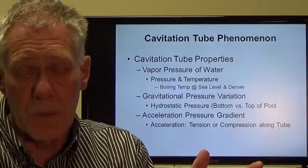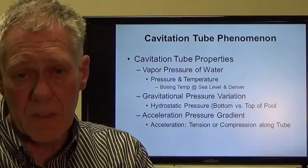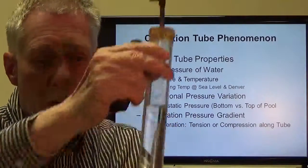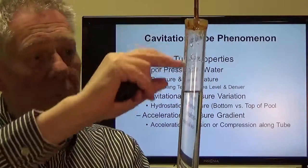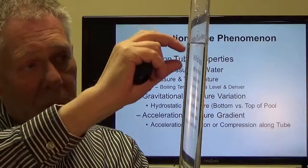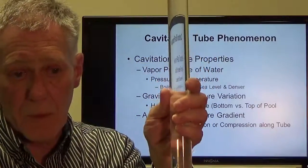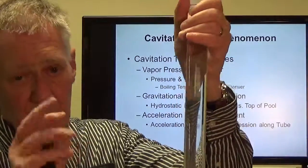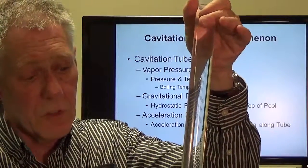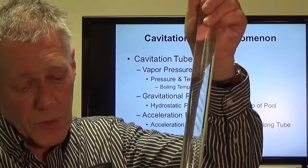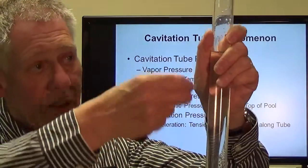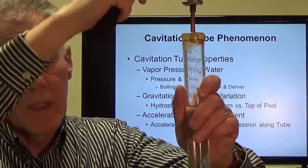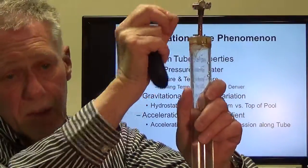That tube is at room temperature, so the pressure inside will have to be lower than atmospheric pressure. There's a gravitational pressure that varies along the tube due to hydrostatic effects — the hydrostatic pressure of the water builds up until you get to the bottom of the tube. And then there's an acceleration pressure gradient. If I were to take this tube and pull it downward, there'd be a force at the bottom to cause it to accelerate, and that force would get less and less toward the top until eventually the acceleration force at that cross-section would be very low.